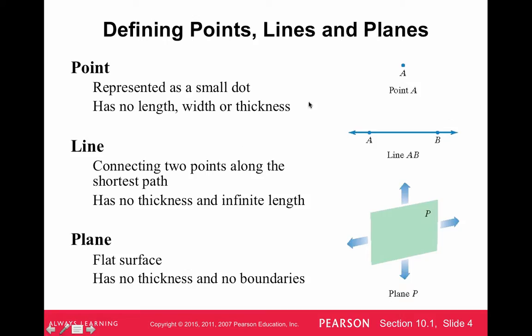A point is just represented by a small dot. That represents a location in space, and we use that to create lines, planes, and volumes, to mark corners of space or cities on a map or something like that.